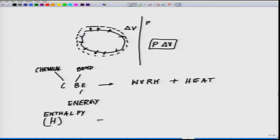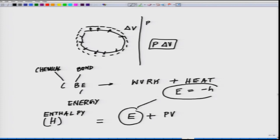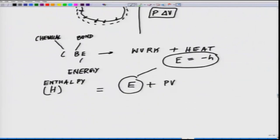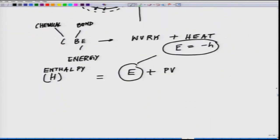Enthalpy H equals E plus PV. If you remember, delta E equals minus H — that is the heat which is lost. Delta E is equal to minus H, that is what we talked about.